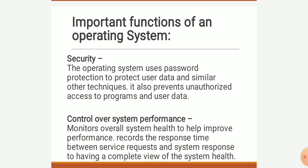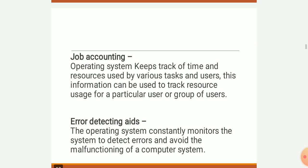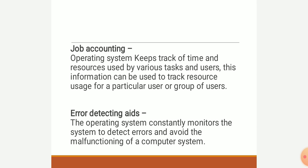It also prevents unauthorized access to programs and user data. Control over system performance: it monitors overall system health to improve performance, recording the response time between service requests and system responses. Next, job accounting: the operating system keeps track of time and resources used by various tasks and users, which can be used to track resource usage for a particular user or group.